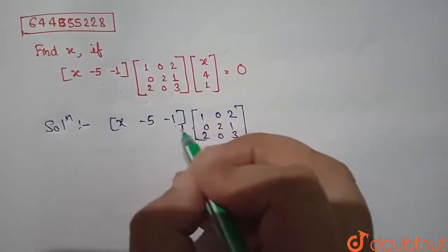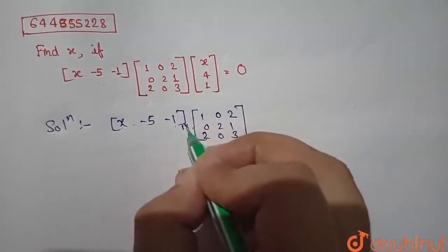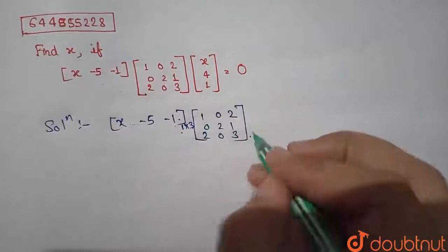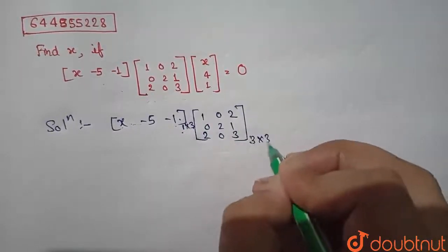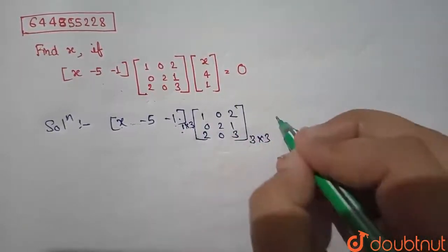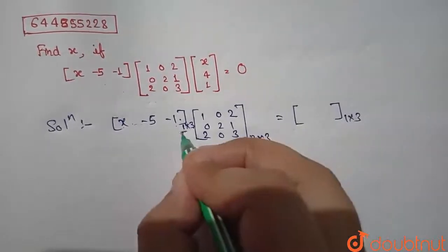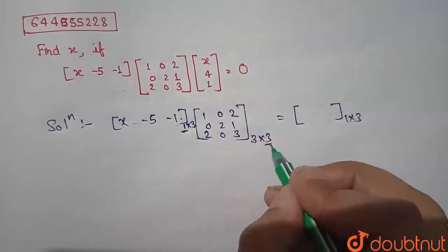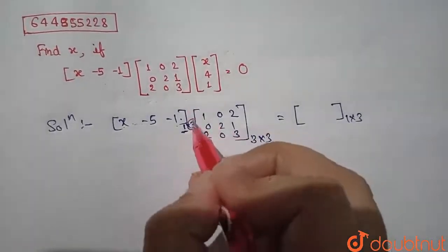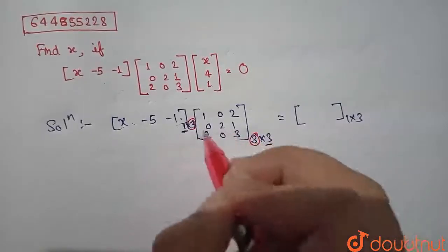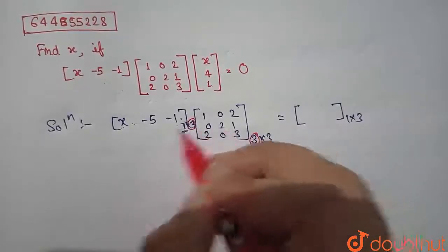Now the order of this matrix is 1 by 3, that is first row and three columns, and order of this matrix is 3 by 3, that is 3 rows and three columns. Final product will be 1 by 3, so it says that we can multiply these two matrices.